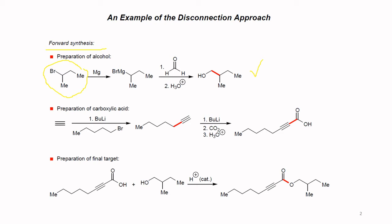For the carboxylic acid, we start from ethyne. To increase the chain length, we perform alkylation using an organolithium reagent in the presence of the desired alkyl halide with the chain length that you want, giving you the extended compound.